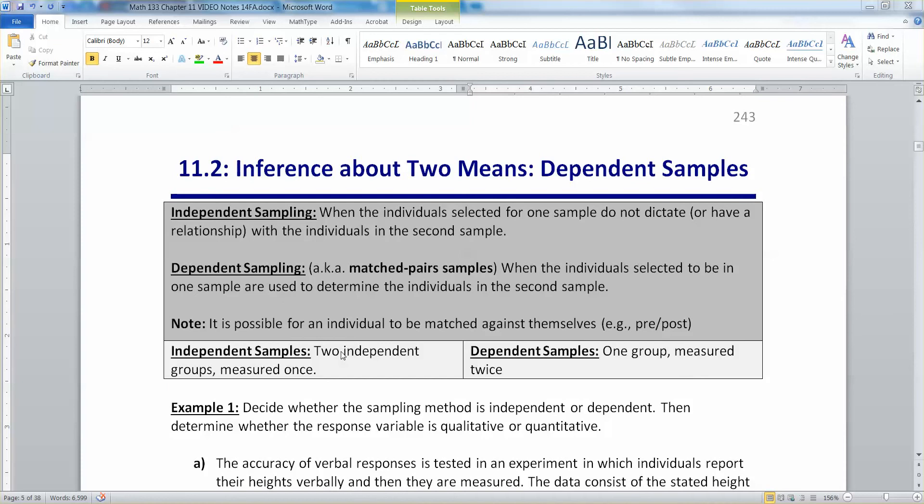The most common way for this to occur is a matched pair sample where it's one person matched against themselves, like a pre-test and a post-test, a before and after, or husbands to wives, brothers to sisters, one twin to another twin, that kind of thing. That's a dependent sample.